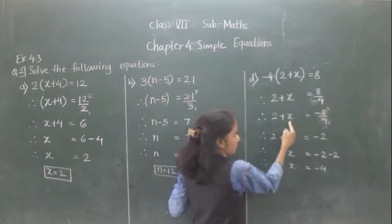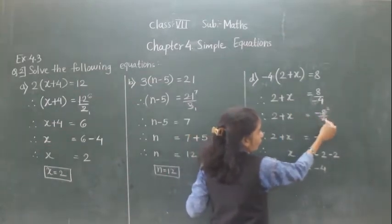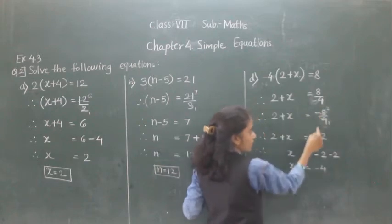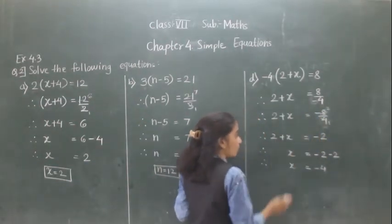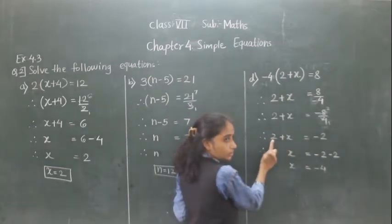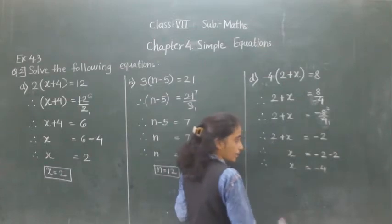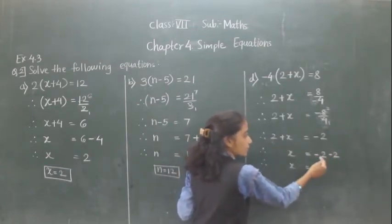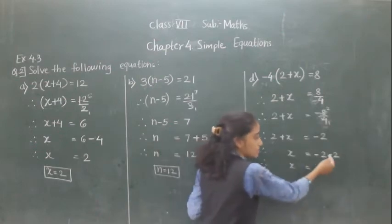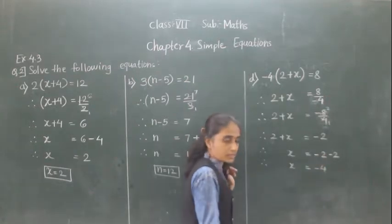So 2 plus x is equal to minus 2. Now 2 is here as plus; if it comes to the right hand side it will become minus. So minus 2 minus 2: minus minus is plus, so x is equal to minus 4, which is negative.